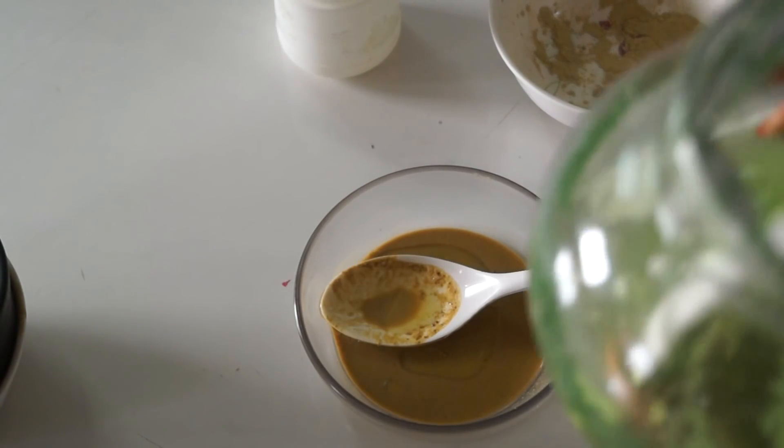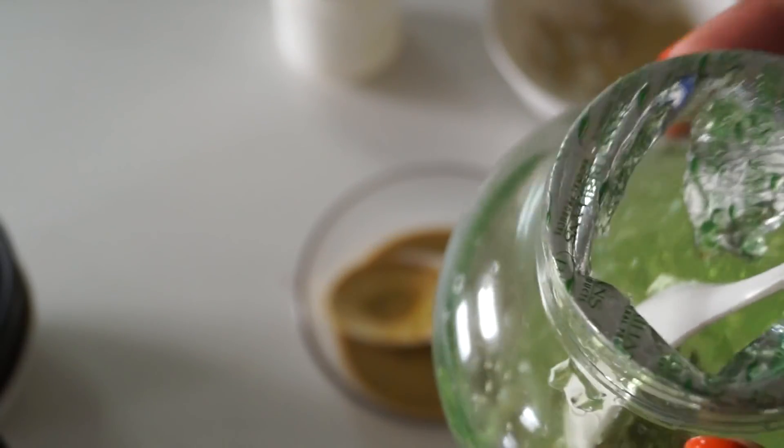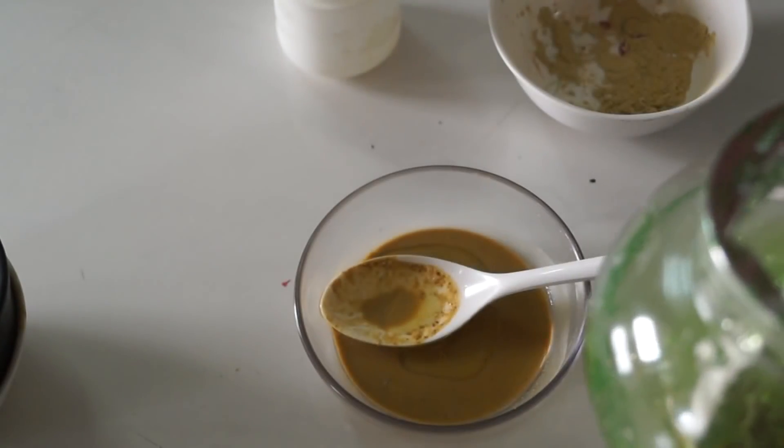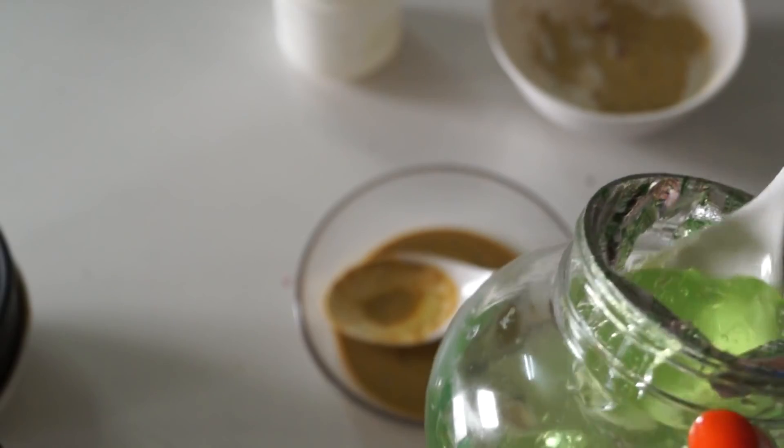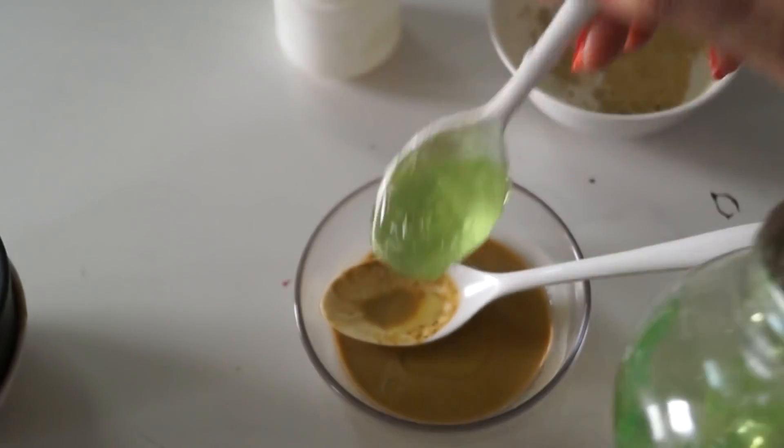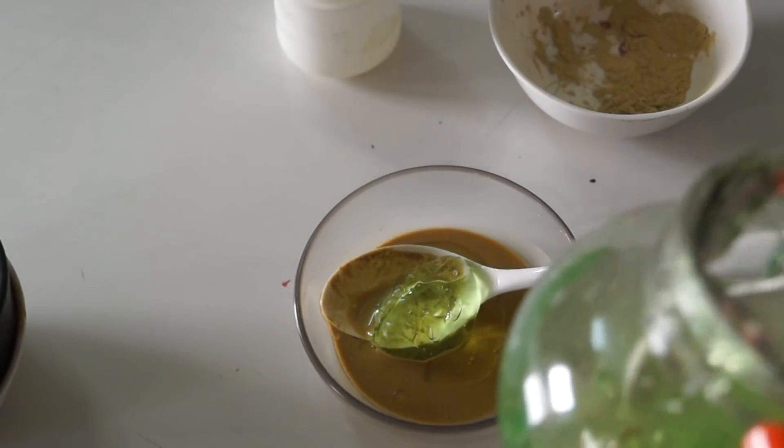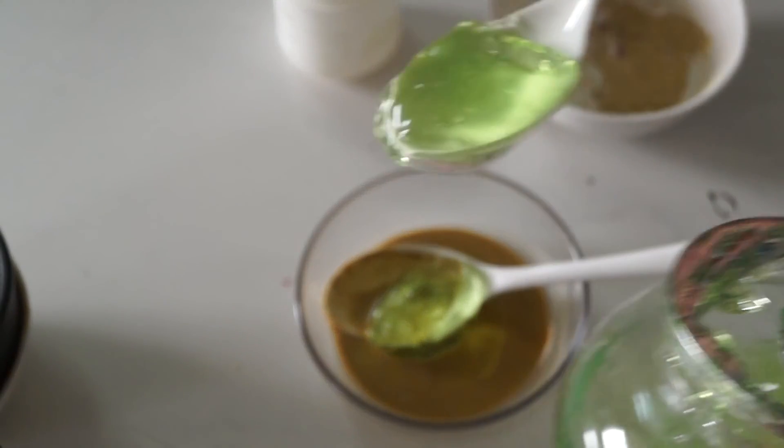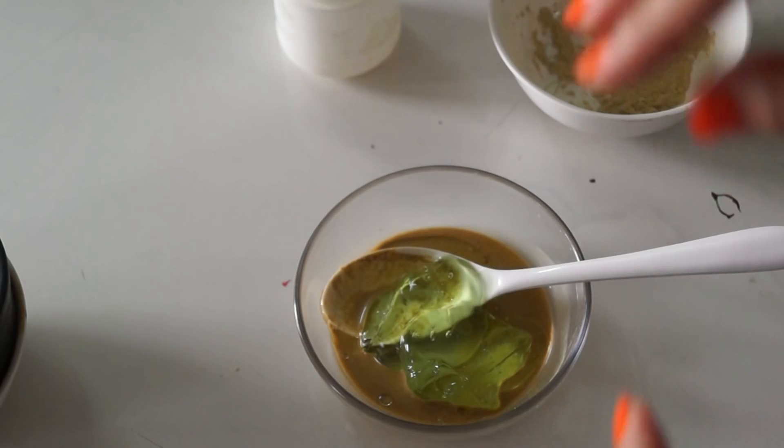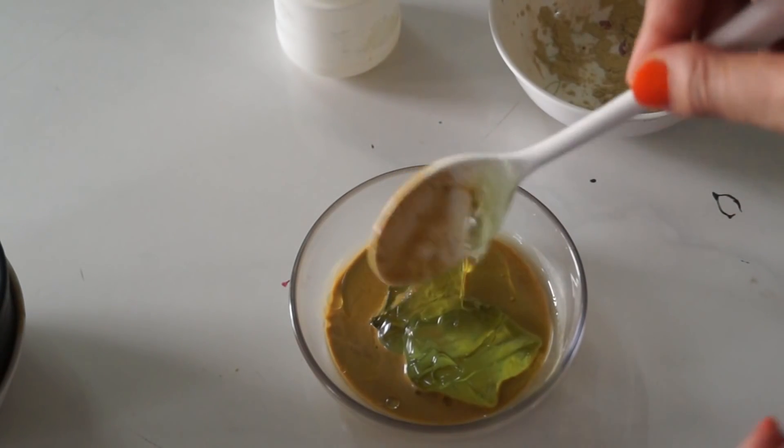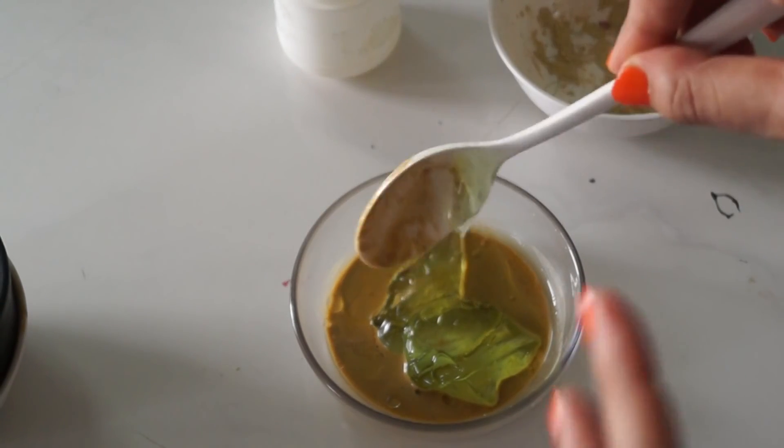Then I am going to add this aloe vera gel. So aloe vera gel will bind the oils with the water. So I am going to add two tablespoons of olive oil. So now combine all these ingredients to get the desired consistency. That is a cream like consistency.